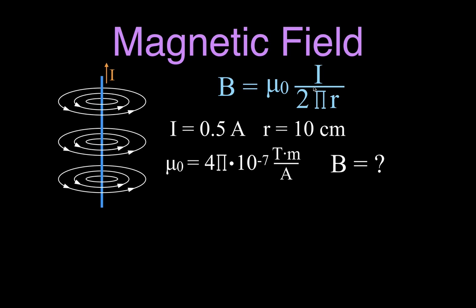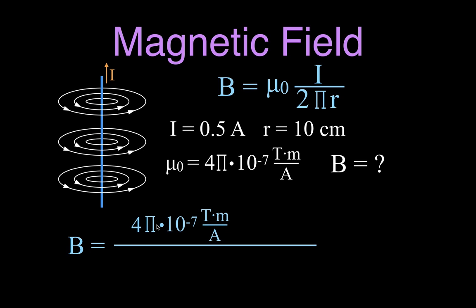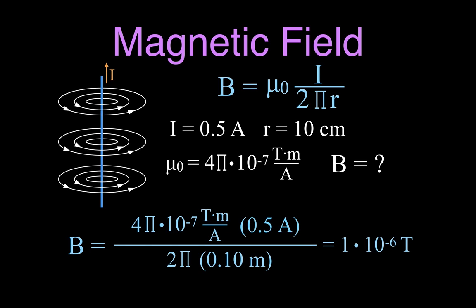This is the equation we're going to use — it's pretty straightforward, we just plug the values in. The magnetic field B equals our constant, 4π×10⁻⁷ tesla·meter/ampere, times the current of 0.5 amperes, divided by 2π times 0.10 meters — converting centimeters to meters. That tells us the magnetic field would be 1.0×10⁻⁶ tesla.